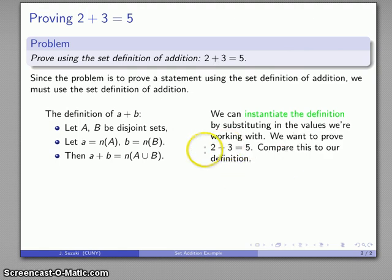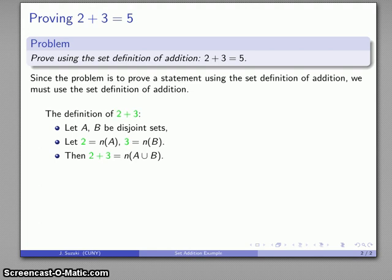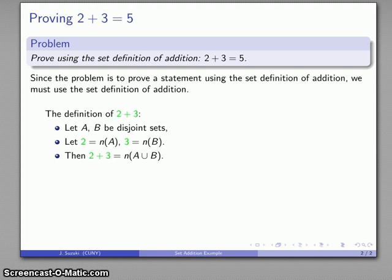I want to compare what I'm trying to prove with our definition. So A is 2, B is 3, and so I'll substitute these values into my definition. The definition of 2 plus 3, well let 2 be the cardinality of the one, 3 be the cardinality of the other, 2 plus 3 is the cardinality of A union B.